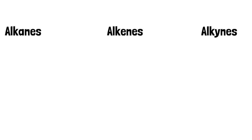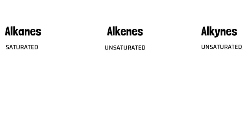So I'll start with the first three: alkanes, alkenes, and alkynes. Alkanes are said to be saturated hydrocarbons. Alkenes are said to be unsaturated hydrocarbons, as well as alkynes — they are unsaturated hydrocarbons, but they're just a little more unsaturated than alkenes.